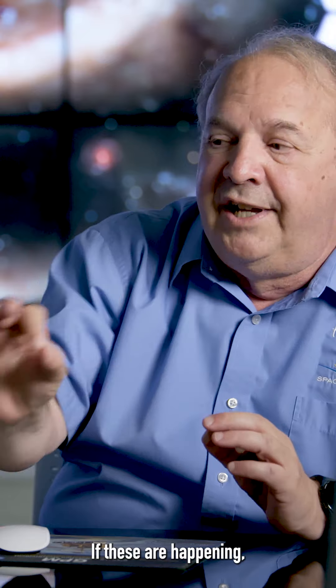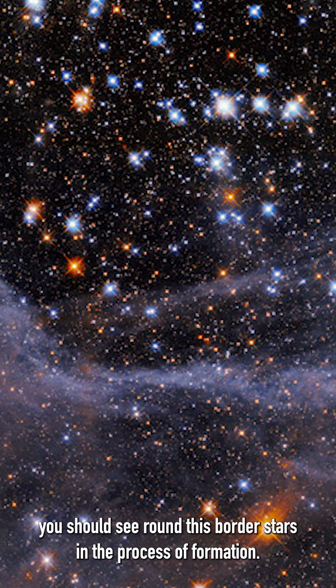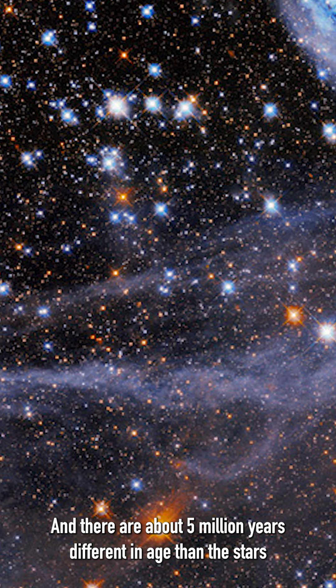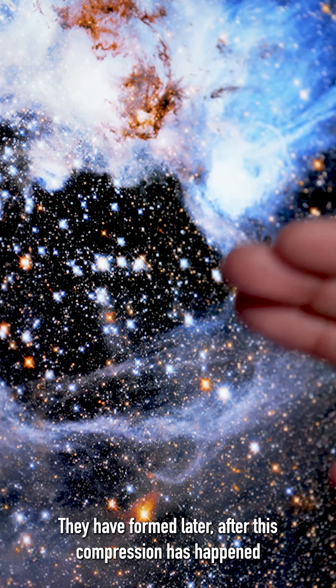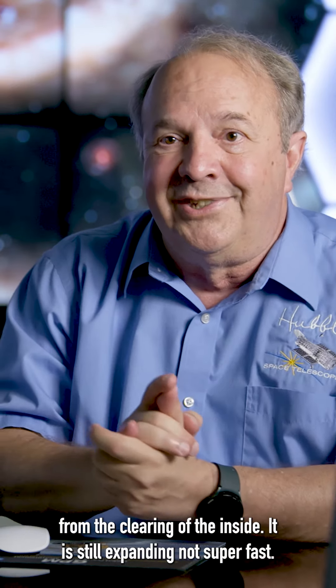If these are happening, you should see around this border stars in the process of formation. And in fact, we do see stars there, and they're about five million years different in age than the stars that are inside. They have formed later after this compression has happened from the clearing of the inside.